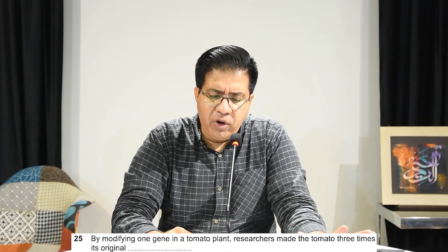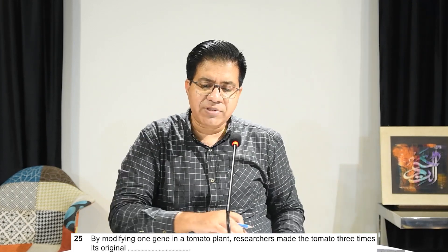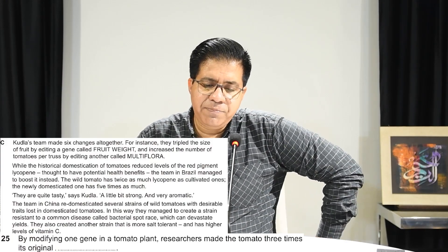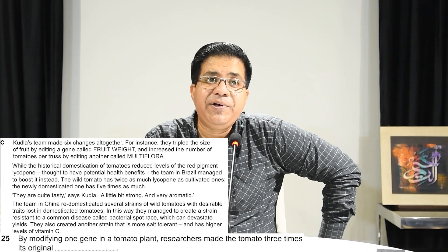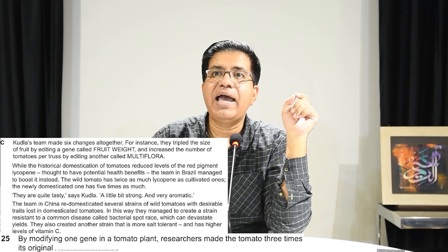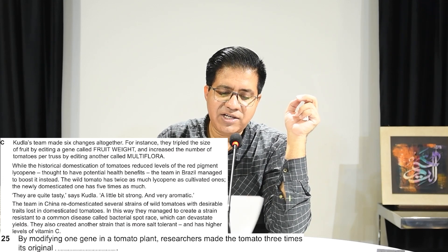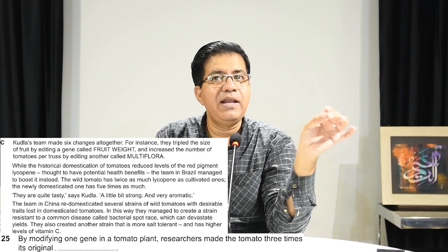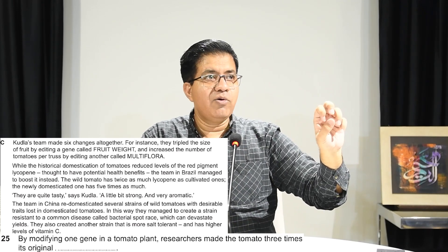Question number 25: 'By modifying one gene in a tomato plant, researchers made the tomato three times its original blank.' The key word is 'three times.' In Paragraph C, Kulda's team made six changes altogether. For instance, they tripled — 'tripled' means three times — the size. So the answer is 'size,' not 'the size' because that would be two words. Three times its original size. The word 'three times' in the passage becomes 'tripled.'